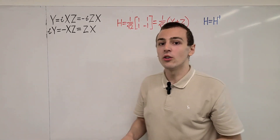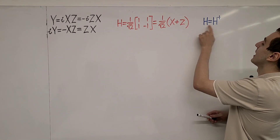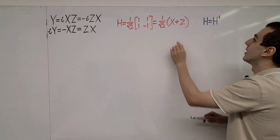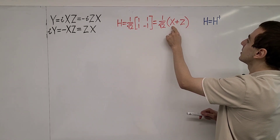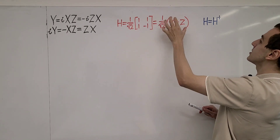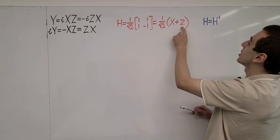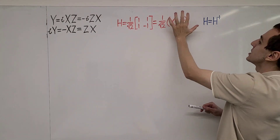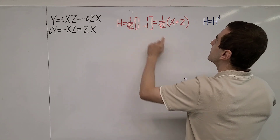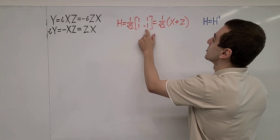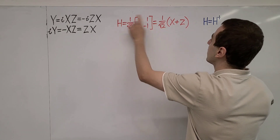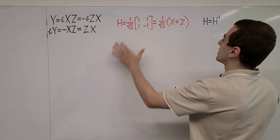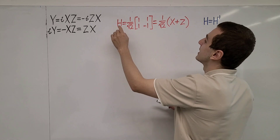Another very important property of the Hadamard gate is that it is Hermitian. You can see just by inspecting this matrix and by looking at this definition that it is Hermitian. Both of these Pauli matrices are Hermitian, so if we take the Hermitian adjoint of the sum of two Hermitian operators, we will get a Hermitian operator. This matrix is symmetric and real-valued, so taking the complex conjugate or the transpose does not change it.